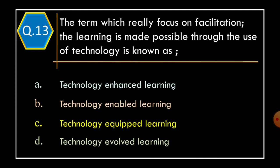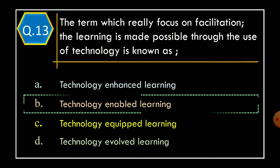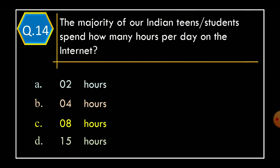Question 13: The term which really focuses on facilitation — the learning is made possible through the use of technology — is known as: Option A: Technology enhanced learning. Option B: Technology enabled learning. Option C: Technology equipped learning. Option D: Technology evolved learning. The correct option is Option B: Technology enabled learning.